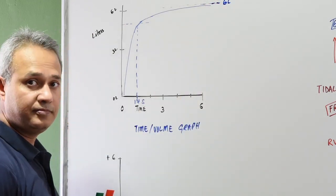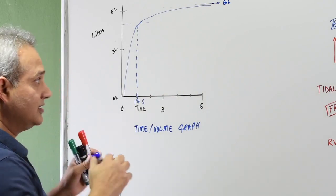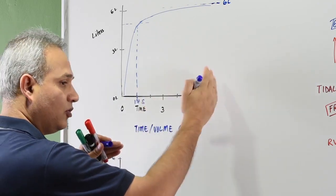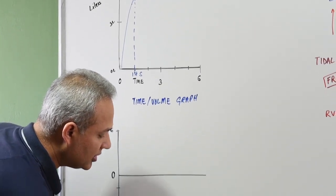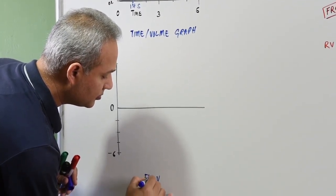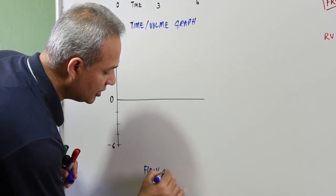So this is the flow and the volume with the time. Now down here we are going to do volume-flow, volume-flow loop.